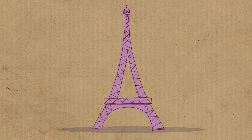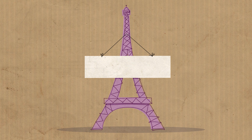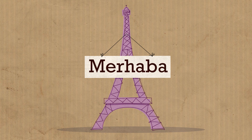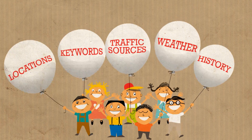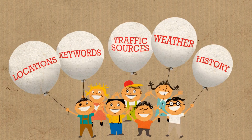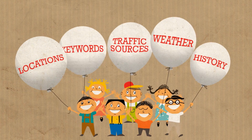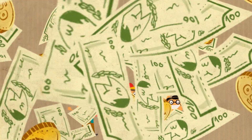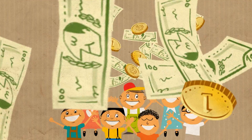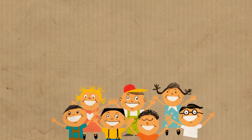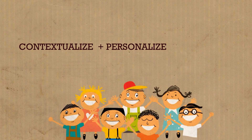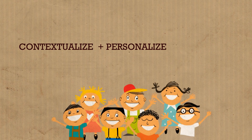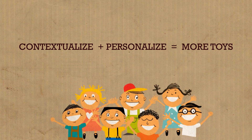With our tool, you can talk in your visitors' language. So if they're from Paris, coming from Google, with the keyword 'cheap toys', you can say to them: Bonjour, bienvenue — here are all the cheap toys you're searching for. You can mix locations, keywords, traffic sources, weather and history on your website so that, at the end, your conversion rate gets higher. Now you can contextualize and personalize your customers' experience in such a way that they are happy to buy more toys.